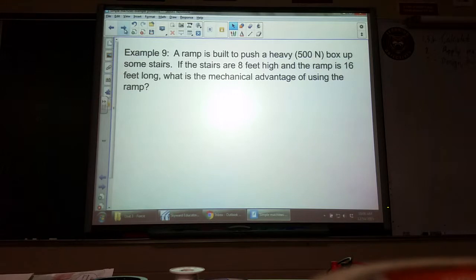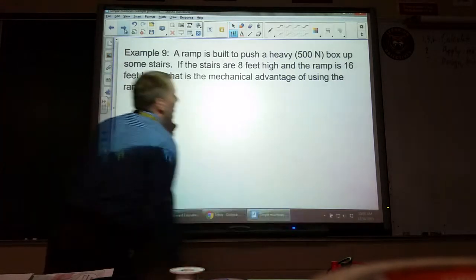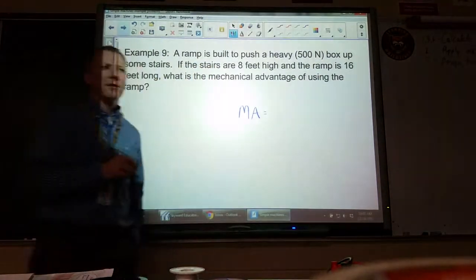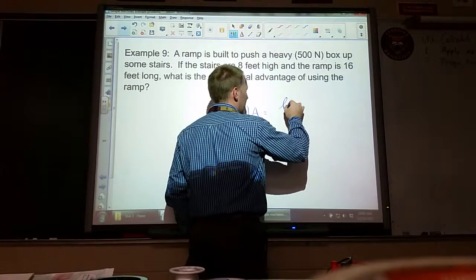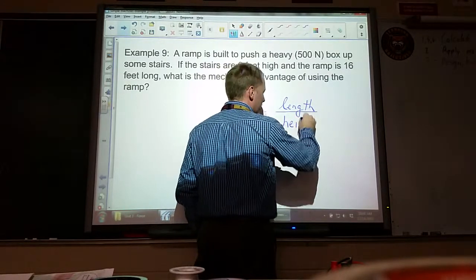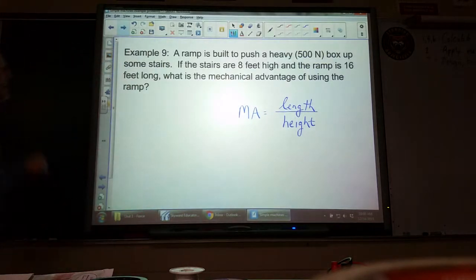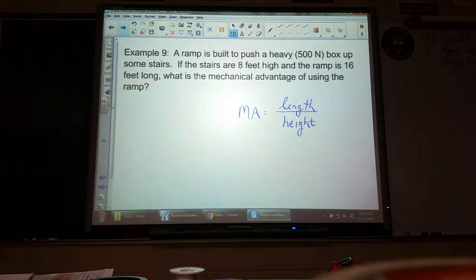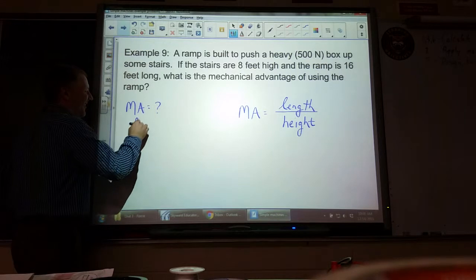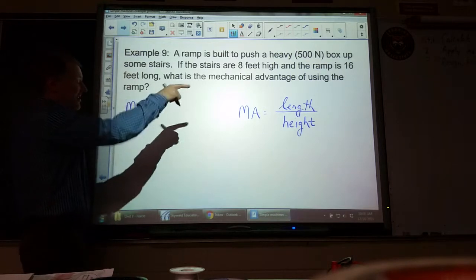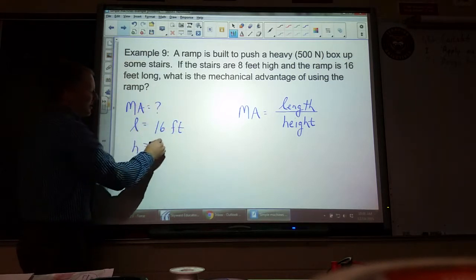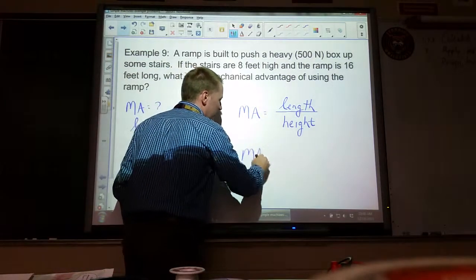It's confusing. That's why I need you to practice. Okay, a ramp is built. We know mechanical advantage of a ramp. How do we find mechanical advantage of a ramp, also called an inclined plane? This is the length of the ramp itself divided by its height, how high it's going. What are we trying to find here? Mechanical advantage, length over height. Length, it's 16 feet long. It's 8 feet high.